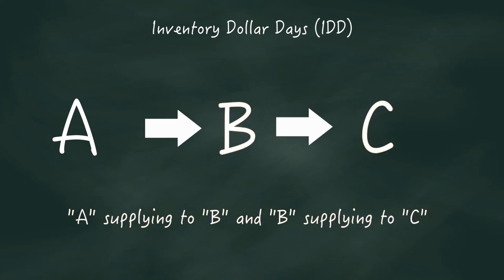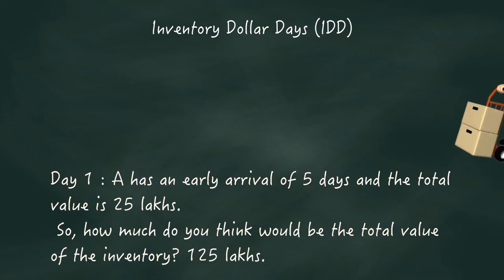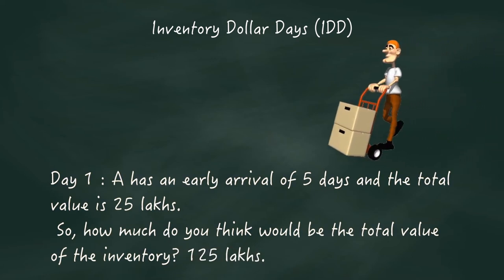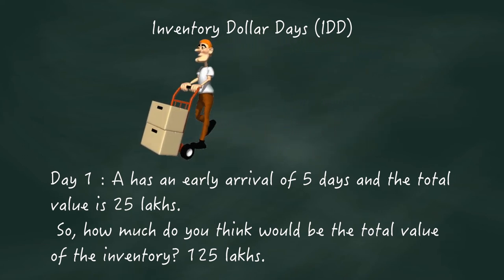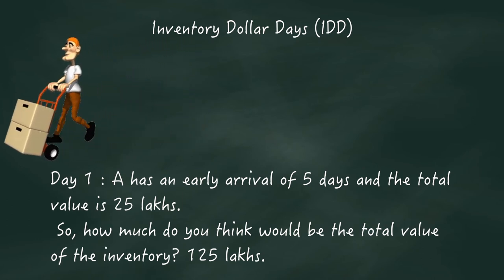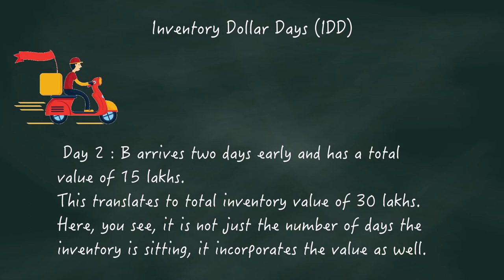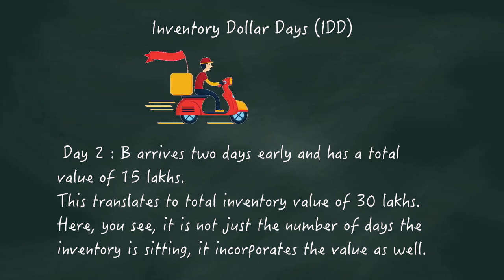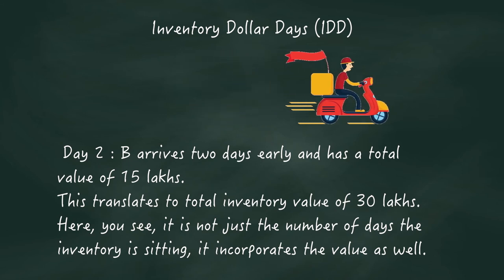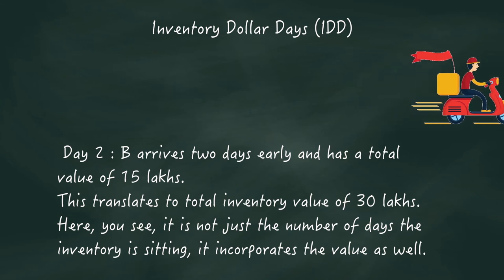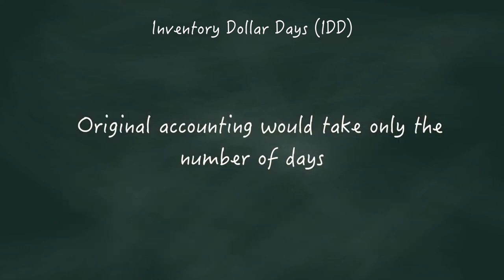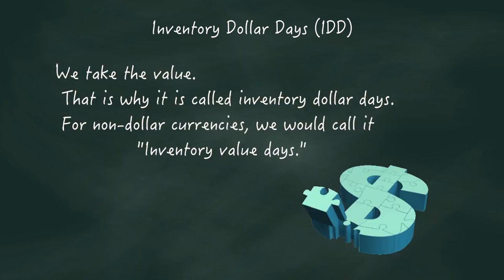The same supply chain A supplying to B and B supplying to C. On the first day, A has an early arrival of 5 days and the total value is 25 lakhs. So how much do you think would be the total value of the inventory? Well, 125 lakhs. Consider B. On the second day, B arrives two days early and has a total value of 15 lakhs. This translates to a total inventory value of 30 lakhs. You see, it's not just the number of days the inventory is sitting. It incorporates the value as well.